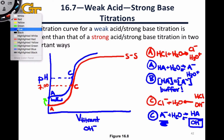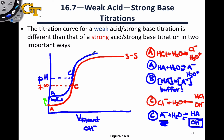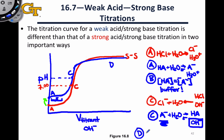As we continue up the titration curve past the equivalence point, we end up with just A⁻ and a negligible amount of HA remaining, as added hydroxide pushes the equilibrium back to the left. Eventually, if we use the same concentration of titrant, the curve levels off at the same maximum pH as the strong/strong titration, since that maximum pH is still driven by the pH of the sodium hydroxide titrant itself. After the stoichiometric point at point D, we're simply piling on hydroxide and water, and the pH cannot exceed the concentration of hydroxide in the titrant — that's why the curve levels off.